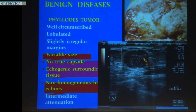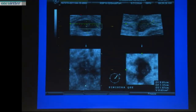The phyllodes tumor is different and can be difficult to distinguish from fibroadenoma on histology, depending on the number of stromal areas inside. Generally we suggest removing the phyllodes tumor, especially when it is small — we know it can become bigger, so it is better to remove it.